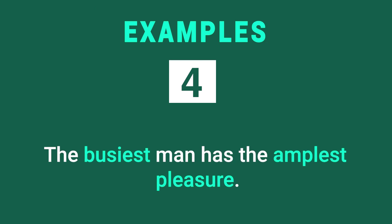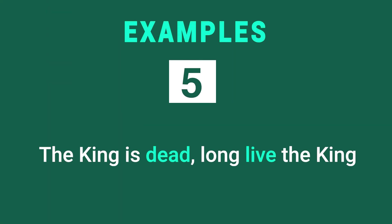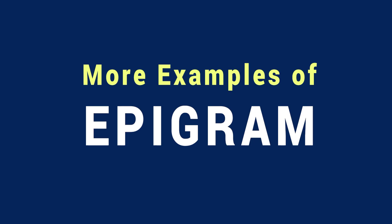Example number four: 'The busiest man has the amplest pleasure.' Busiest and amplest are again contradictory ideas — how can a busy man have ample pleasure? It will shock the readers, but it is based on the idea of contrast or difference. Example number five: 'The king is dead. Long live the king.' A very famous expression heard in the UK. Dead and live are again contradictory ideas, and this witty statement unfolds a truth.